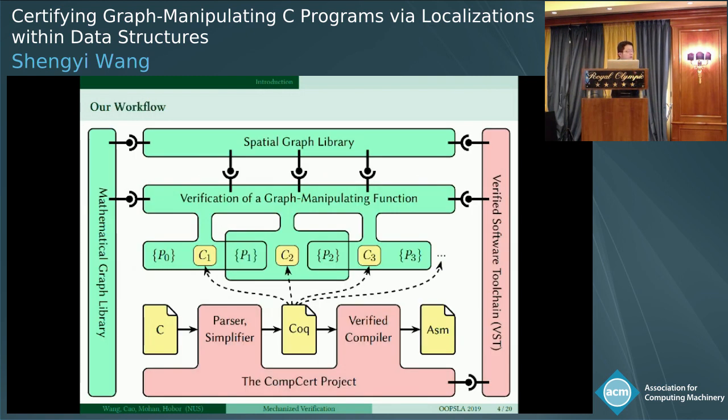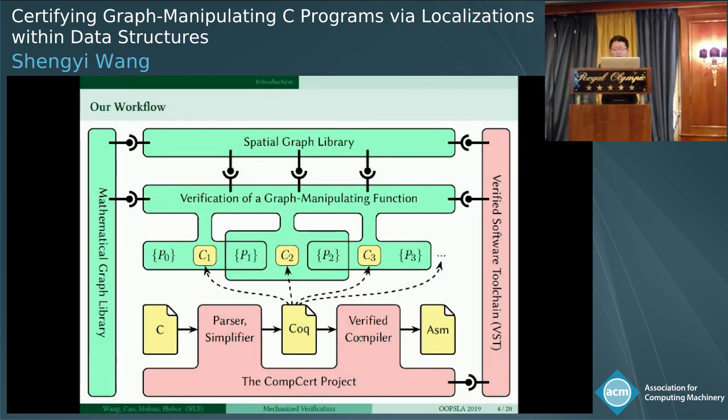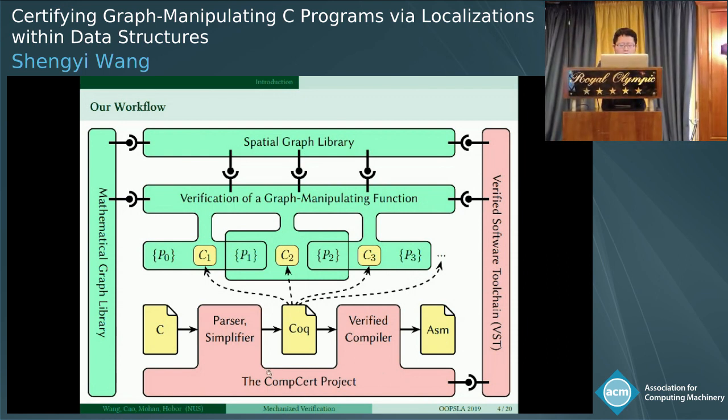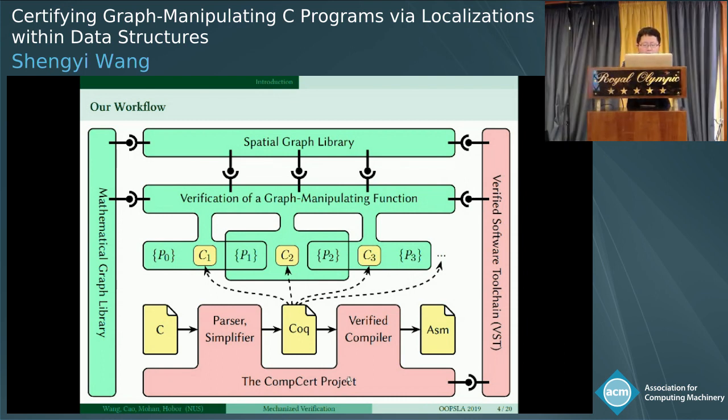Here is our workflow. From the lower left corner, starting from a C program, the CompCert project will parse and simplify it into a Coq file, which is basically the AST of the C code. It can be decomposed into several C commands. After that, when generated the Coq file, the verified compiler will compile it into the assembly code. The whole CompCert project is a verified certified compiler because it keeps the semantics from C to the assembly code.